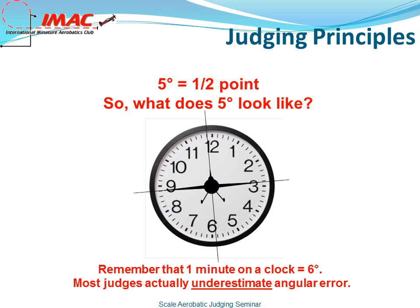5 degrees equals half a point. So what does 5 degrees look like? Remember that one minute on a clock is 6 degrees. Most judges actually underestimate angular error.